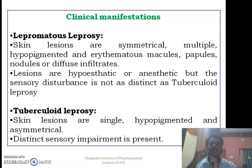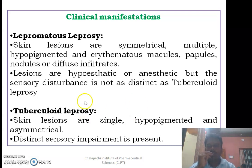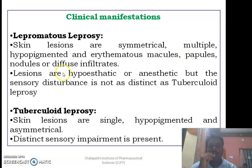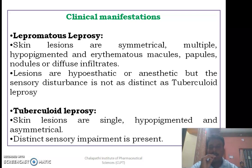In lepromatous leprosy, skin lesions are symmetrical and multiple. The immune reaction against Mycobacterium leprae produces hypopigmented and erythematous macules, papules, nodules, and diffuse infiltrates — blister-type nodules are observed. The skin lesions are hypoesthetic or anesthetic in nature due to peripheral nerve involvement, meaning patients cannot feel sensation when those lesions are touched, though sensory disturbance is less distinct than in tuberculoid leprosy.